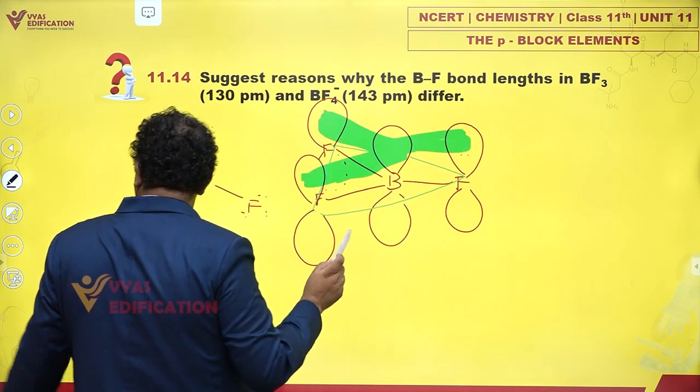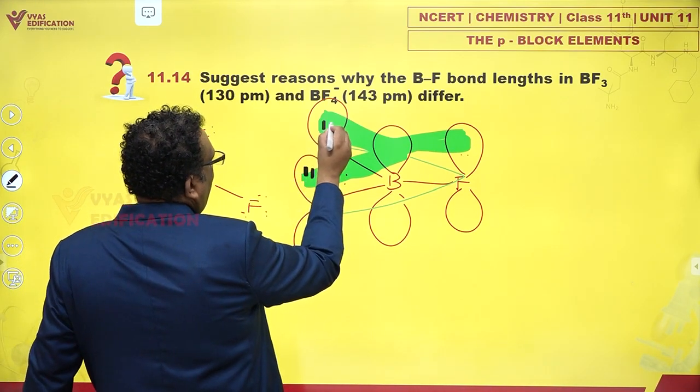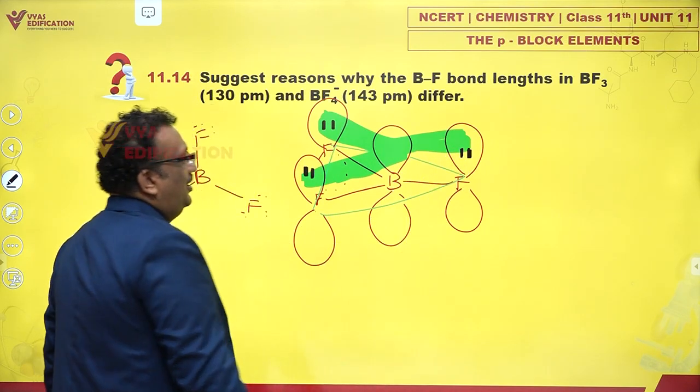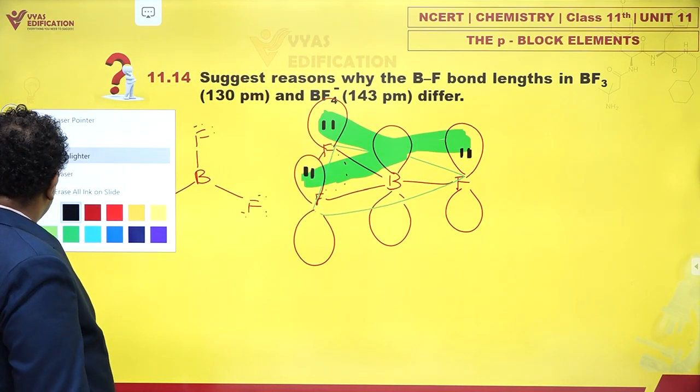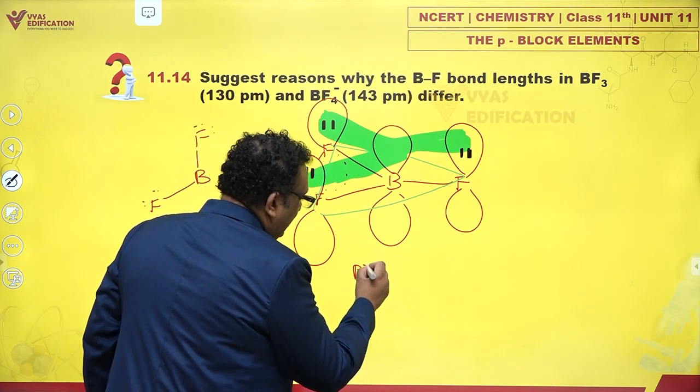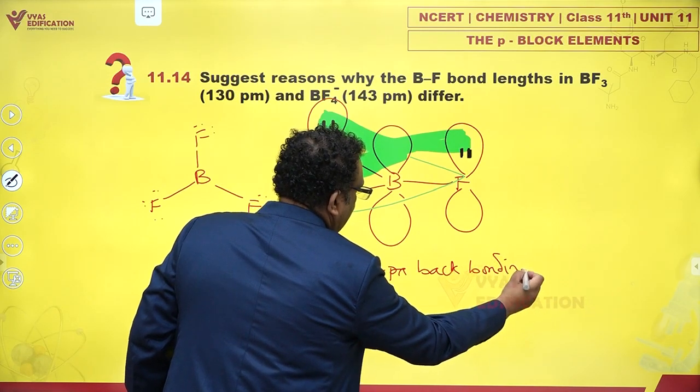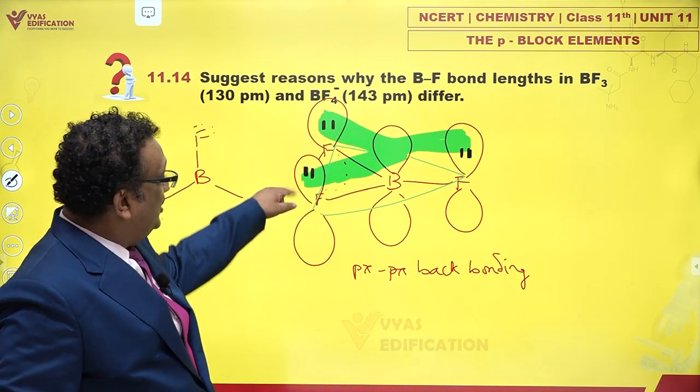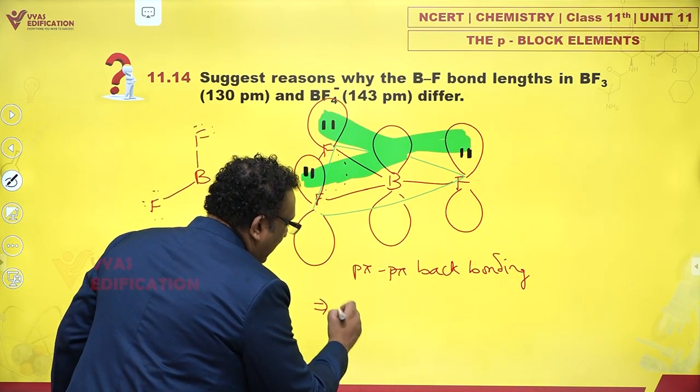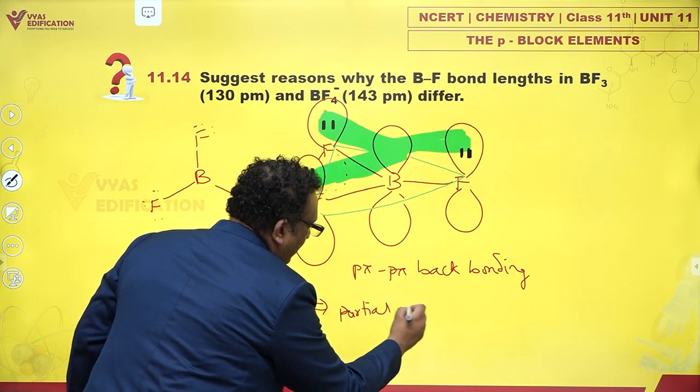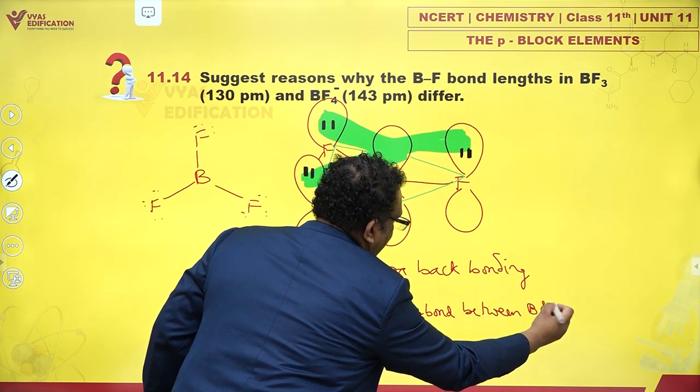Because of this delocalization, there are lone pairs here. Each fluorine has a lone pair, and this lone pair shares itself with boron. There is extensive P pi-P pi backbonding between lone pairs on fluorine atoms and the empty P orbital of boron. This gives a partial pi bond between boron and F atoms.